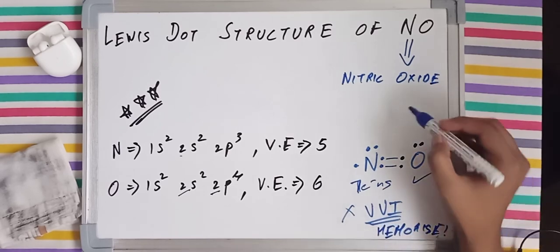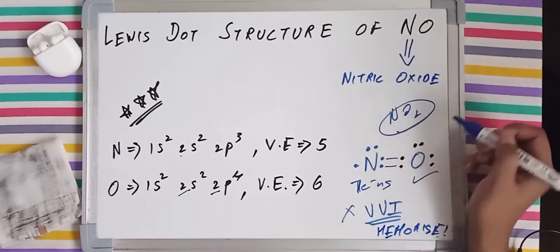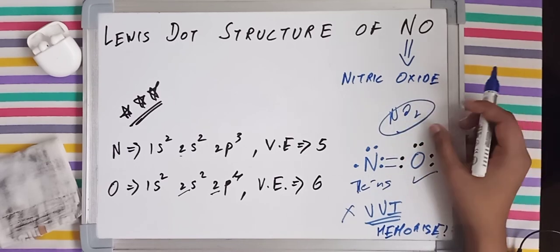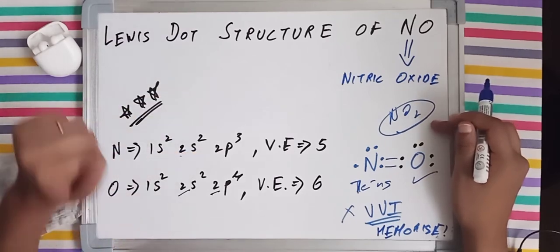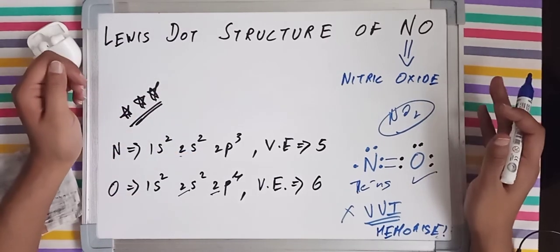And also watch the video of NO2, nitrogen dioxide, very important because it too does not follow Lewis octet rule. I'll see you guys in the next video, and thank you.